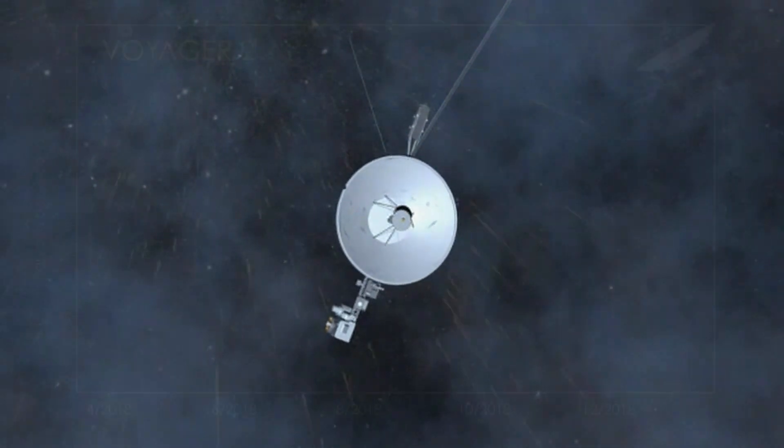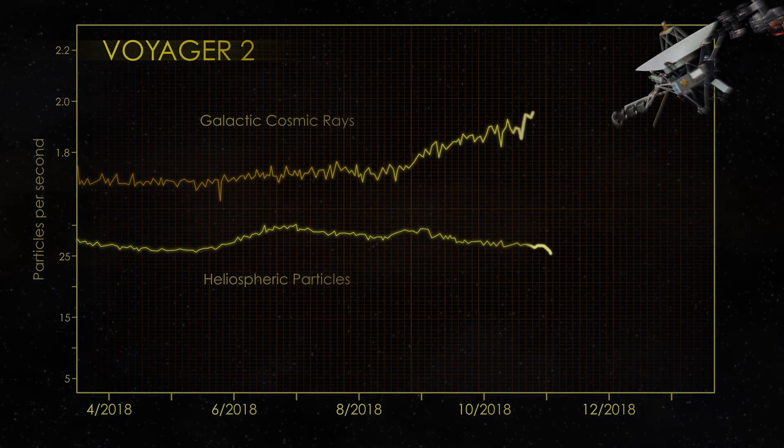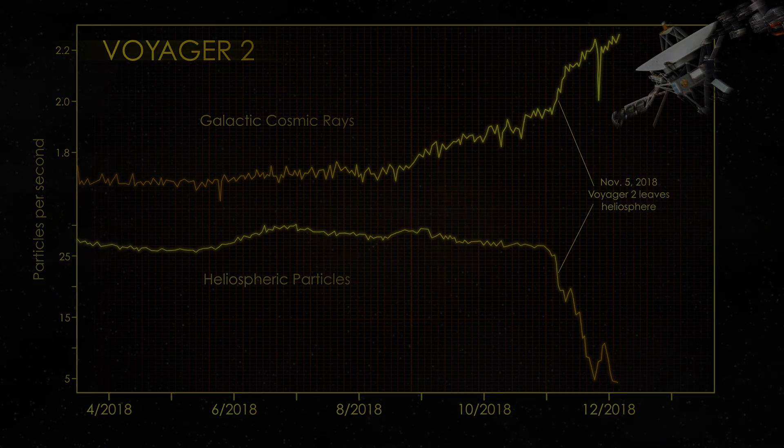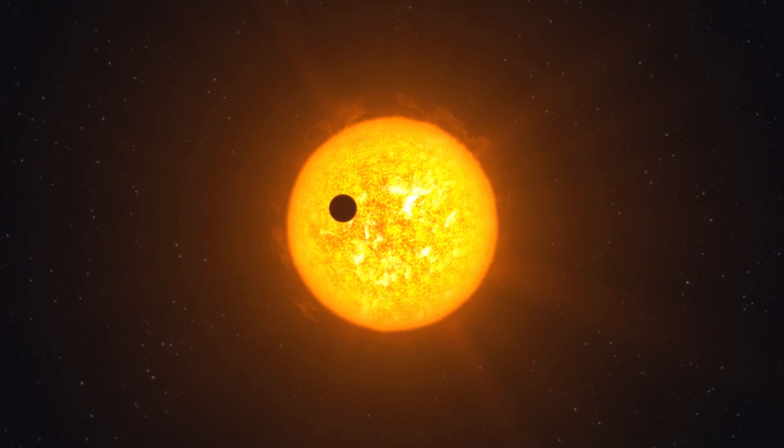As soon as it started to cross this boundary, it was bombarded with cosmic radiation 40 times more powerful than inside the heliosphere, showing us just how much the sun is protecting us from the rest of the galaxy.